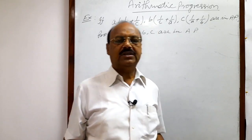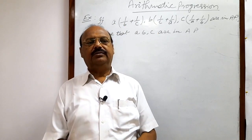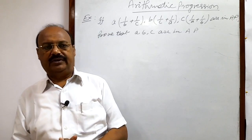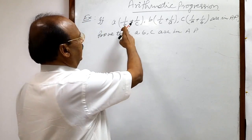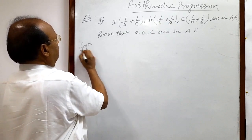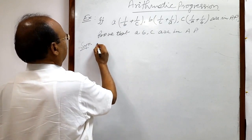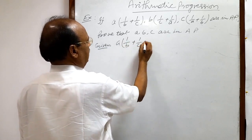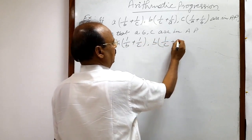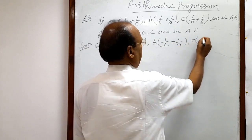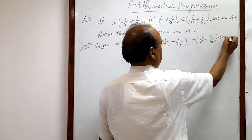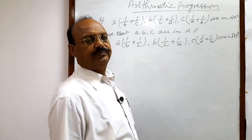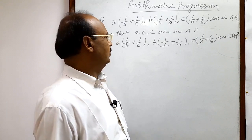We will use the property that three given numbers are in AP if the difference between two consecutive numbers is equal, which is known as the common difference. So, given that these numbers are in AP, the difference between two consecutive numbers will be equal.